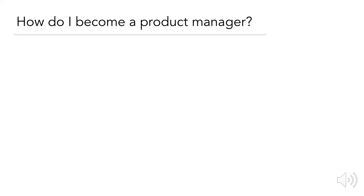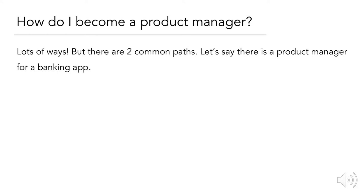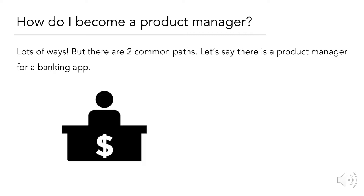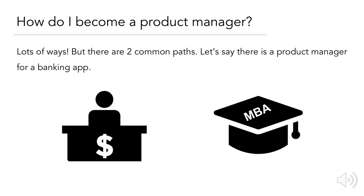So how do you become a product manager? There are lots of ways, but two very common paths. In a hypothetical situation, let's say there's a product manager for a banking app. One path: someone works in the banking industry for many years — maybe as a teller, working their way up to customer specialist or even branch manager. They know the lingo, the industry history, and what it's like to perform the job. They also know what problems banking customers have. However, this industry knowledge doesn't automatically qualify someone to be a product manager — they'll still have to learn technology aspects like agile, scrum development, and user experience.